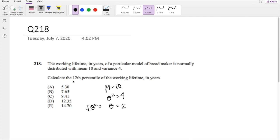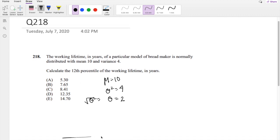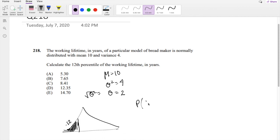Anyways, now they're asking find the 12th percentile of the working lifetime in years. So if this is our normal distribution, they're saying 12th percentile, which means before it there's 12% in here. Some x less than this number, let's say like the 12th percentile, x12th, is equal to 12%.